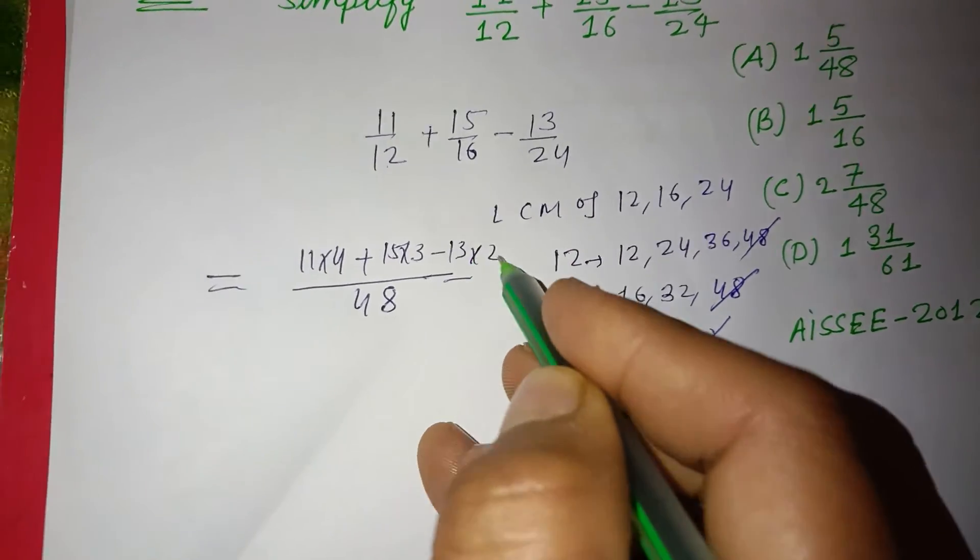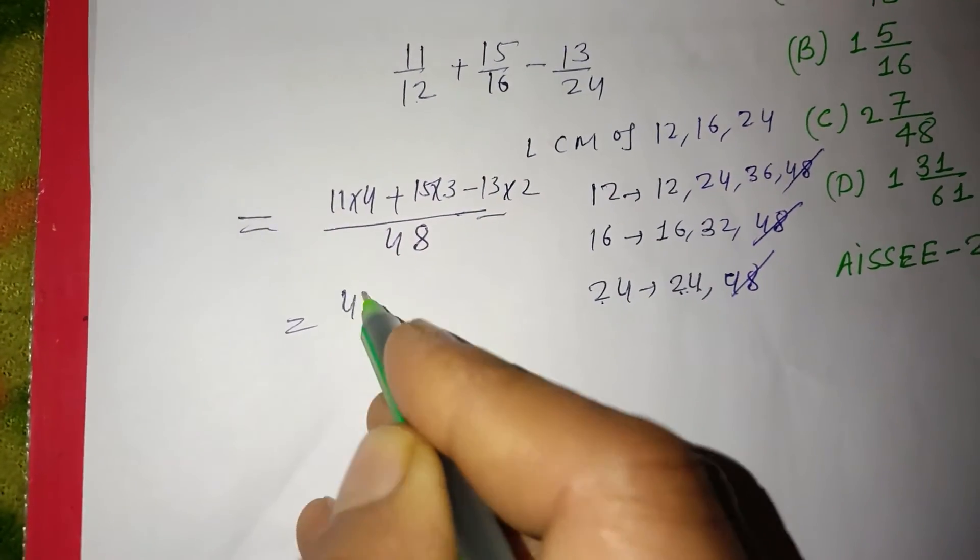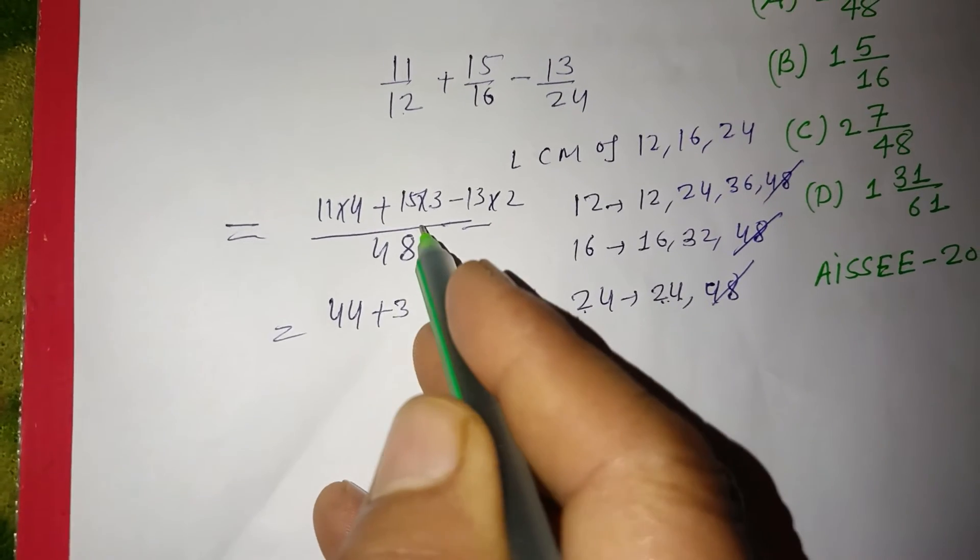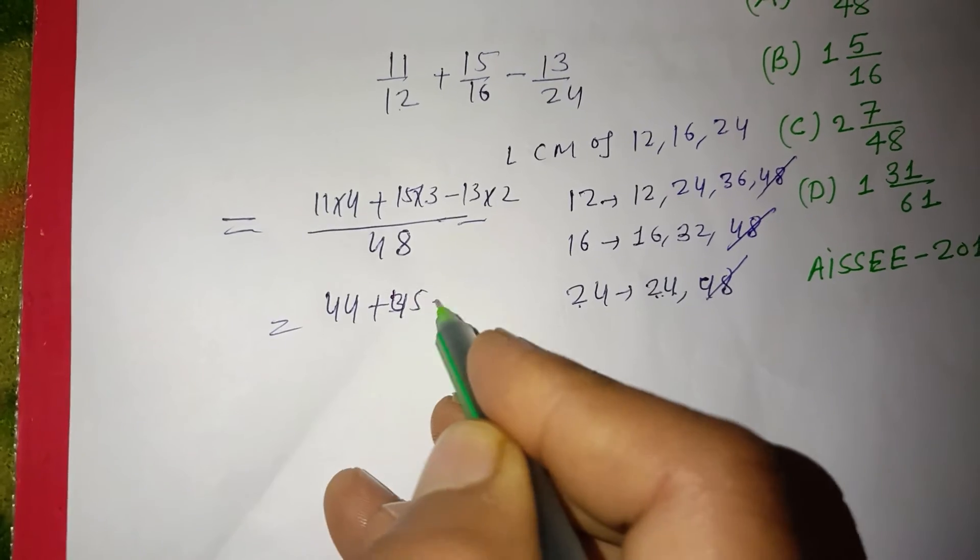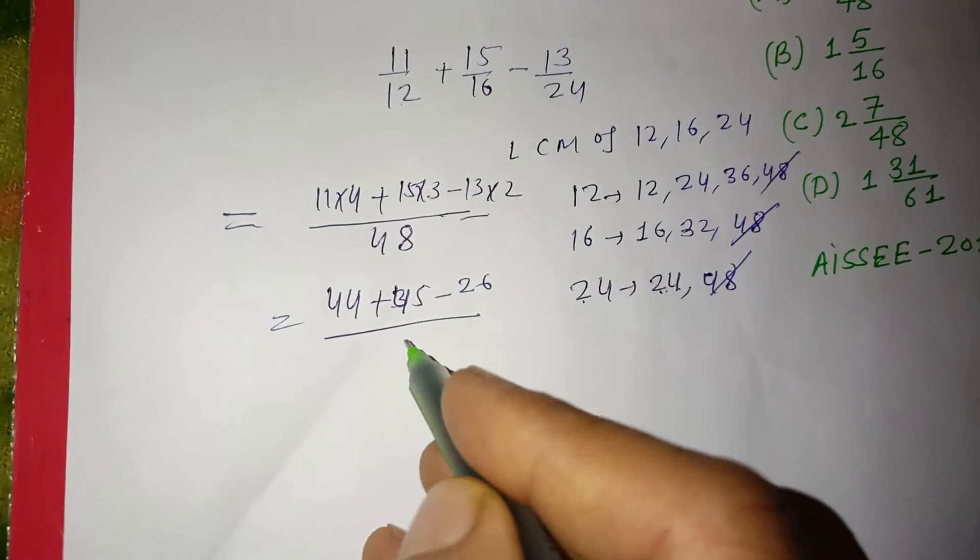11 times 4 is 44, 15 times 3 is 45, and 13 times 2 is 26. This gives us (44 + 45 - 26)/48.